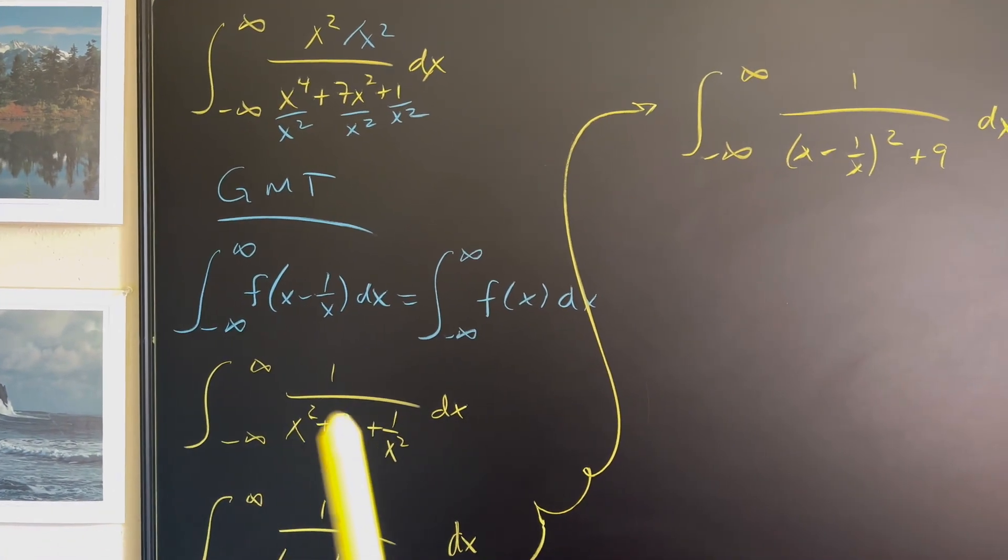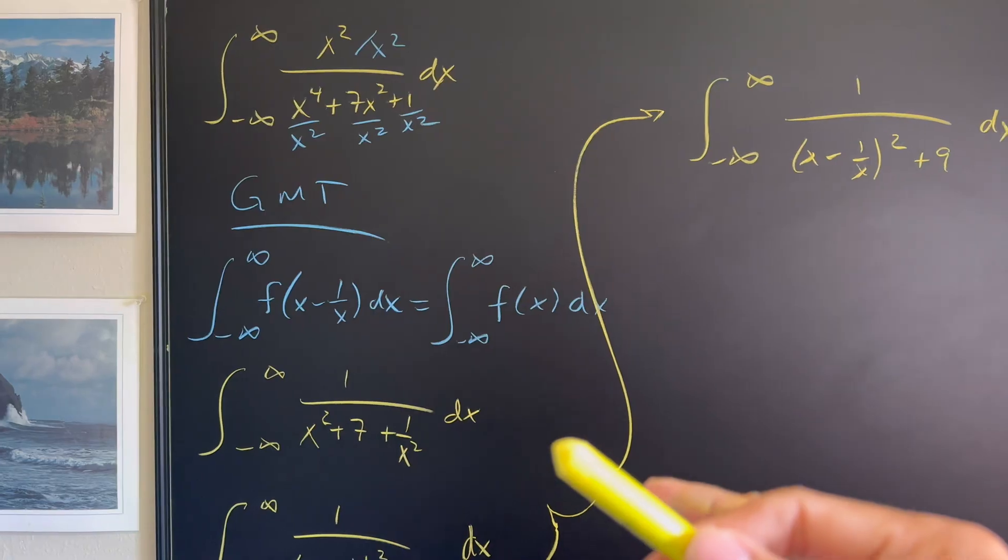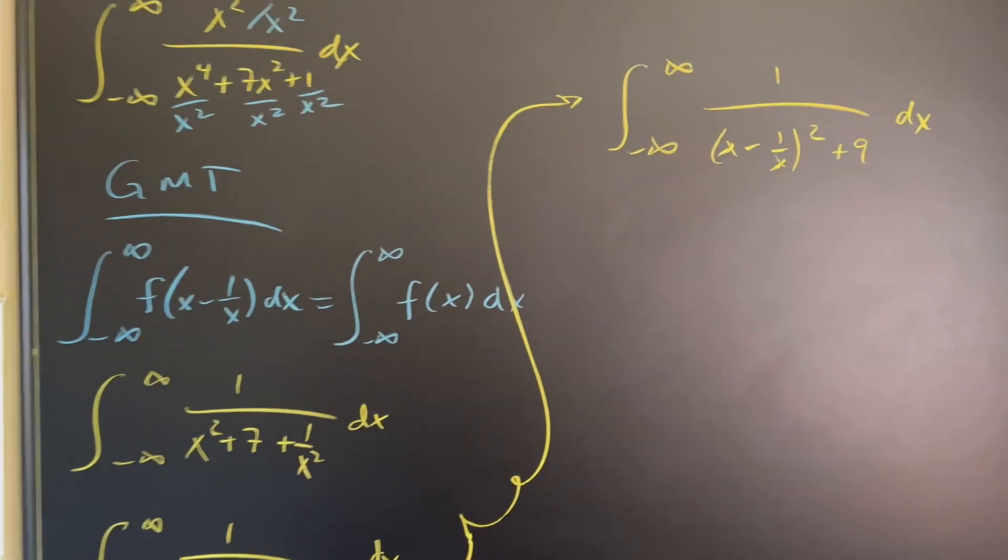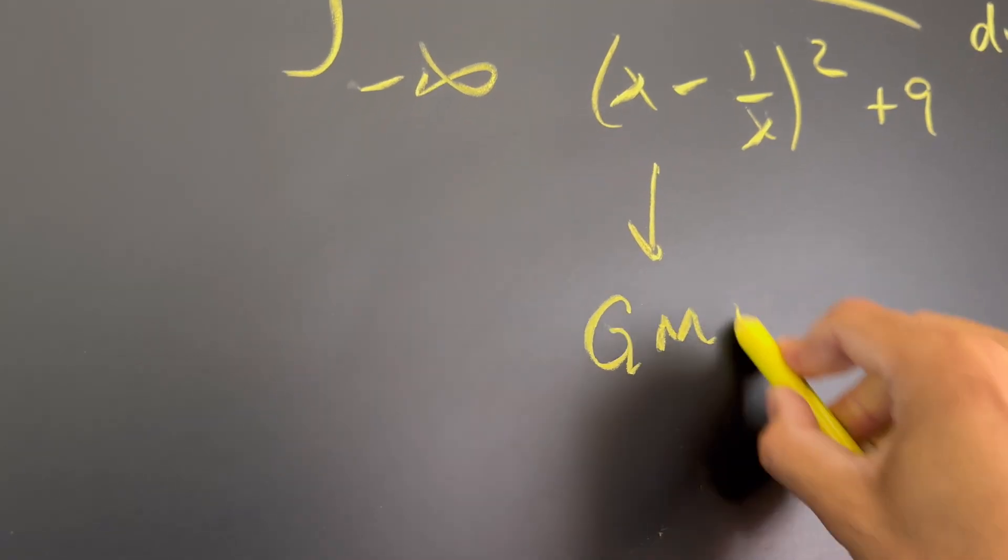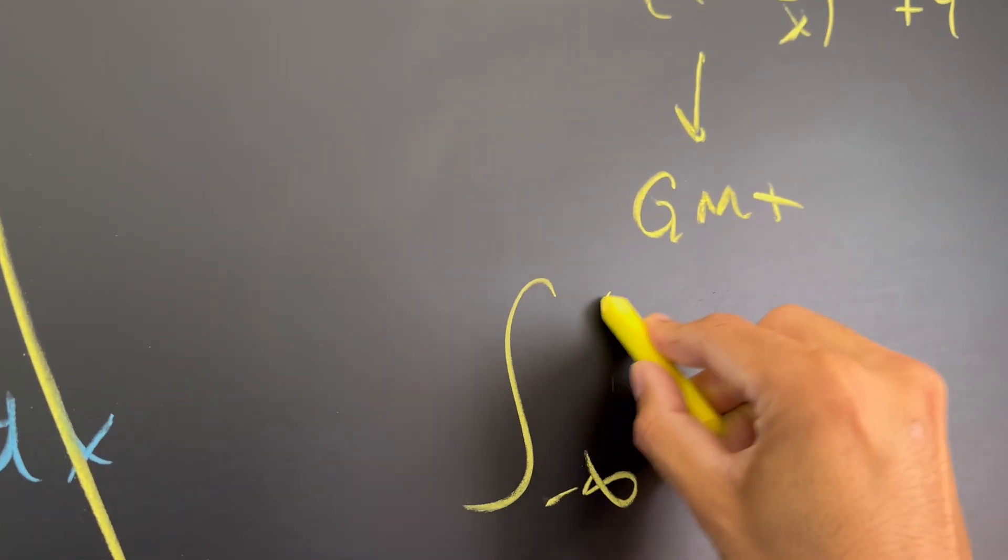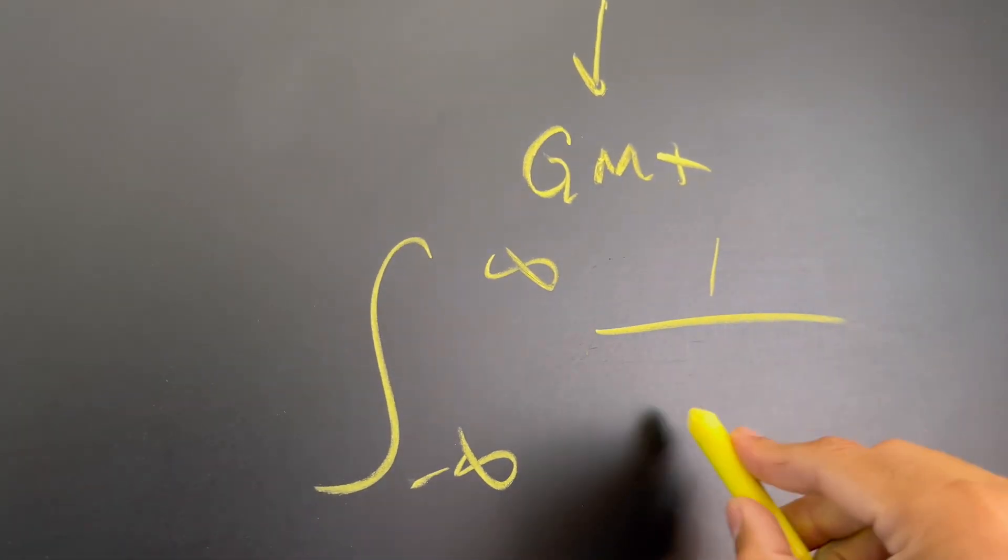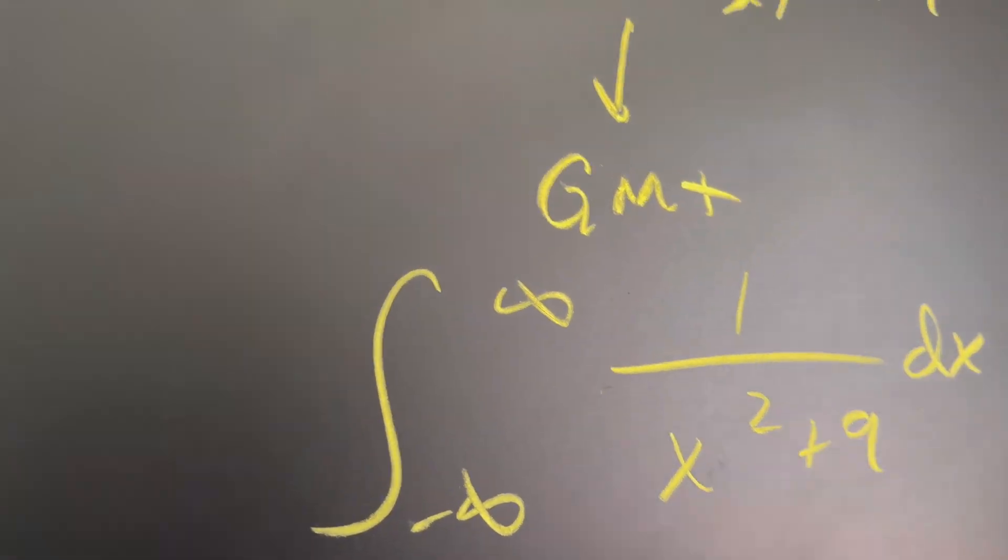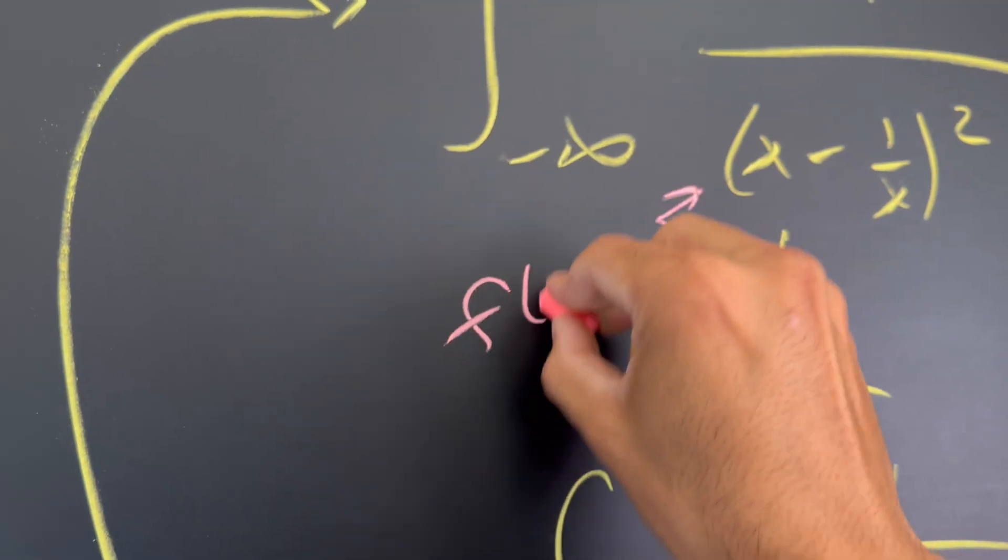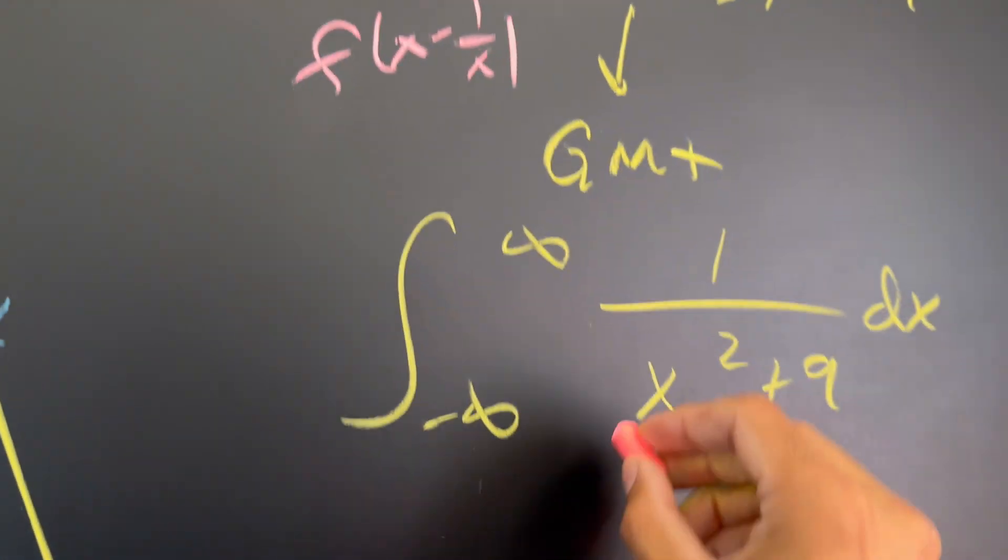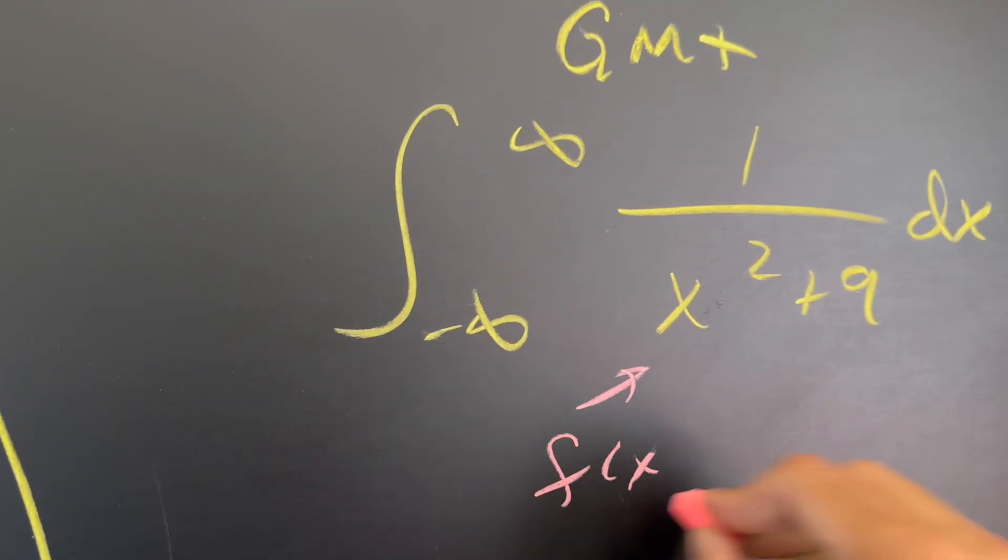And by Glaser's master theorem, this tells me that if I have f of x minus one over x, all I'm going to get is an f of x. So this, by Glaser's master theorem, will become integral from negative infinity to infinity of one over simply x squared plus nine with respect to x. So what happened here is this was my f of x minus one over x, and this right here will become my f of x.